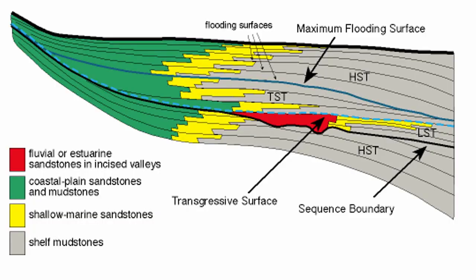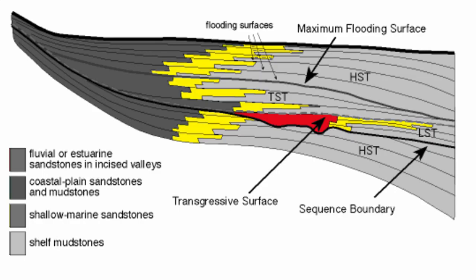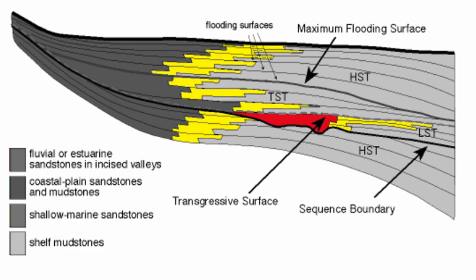Now let's look at how we track system tracts in clastic systems. In clastics, we typically want to track the beach sand — the beach facies is our indicator of what happens in terms of base level change. If I show you this typical Exxon slug diagram and gray out everything but the beach facies, we're left with that yellow facies. During the low stand tract (LST), the beach facies is furthest towards the basin. During the TST, we have retrogradation of those beach facies. Then once we get to the maximum flooding surface, there's an inflection and a change in trajectory: the beach sand starts to prograde towards the basin, because base level rise is slowing down and sedimentation takes over.